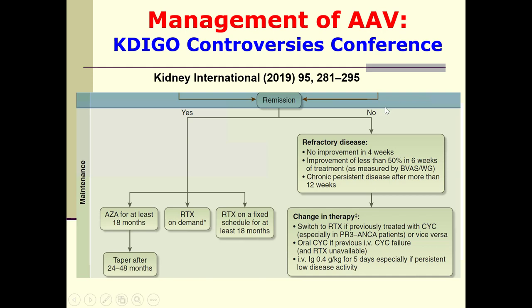If there is no remission, we are dealing with refractory disease — no improvement with chronic persistent disease after more than 12 weeks. Therapy for refractory disease involves switching to rituximab if previously treated with cyclophosphamide, especially in Proteinase-3 ANCA patients; or vice versa, oral cyclophosphamide if IV cyclophosphamide failed and rituximab is unavailable; or IVIG at 0.4 g/kg for 5 days, especially for persistent low disease activity.